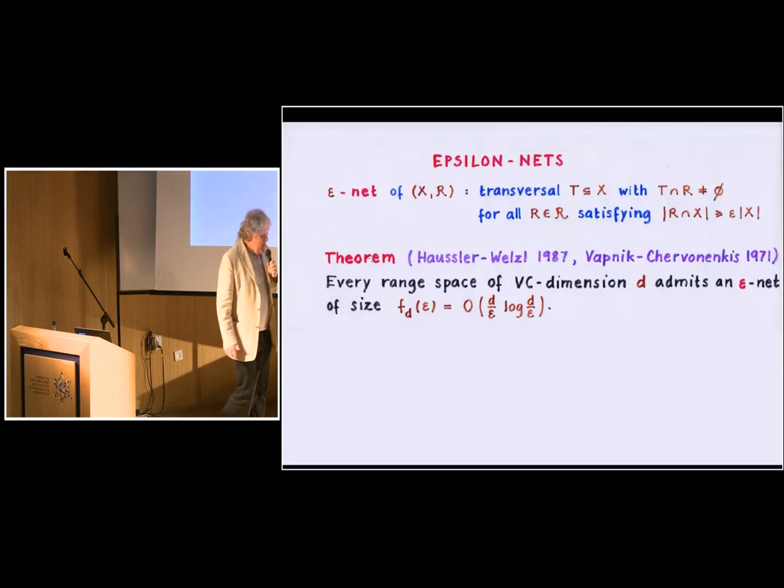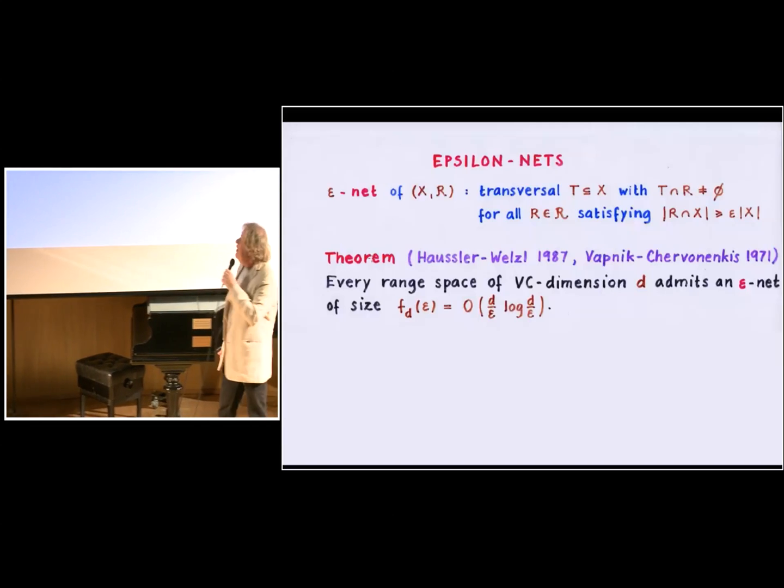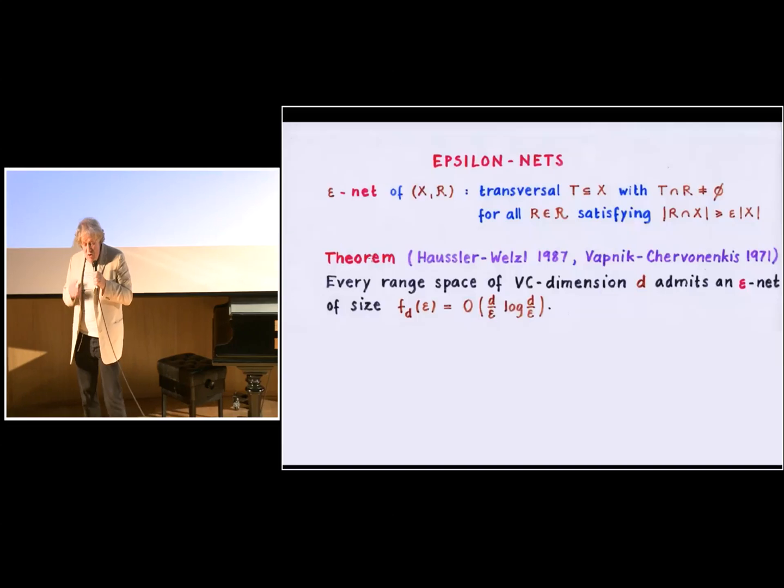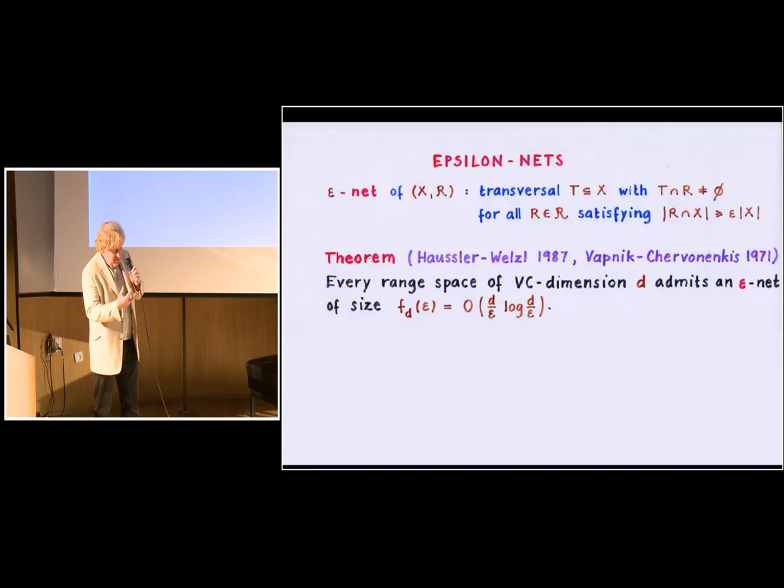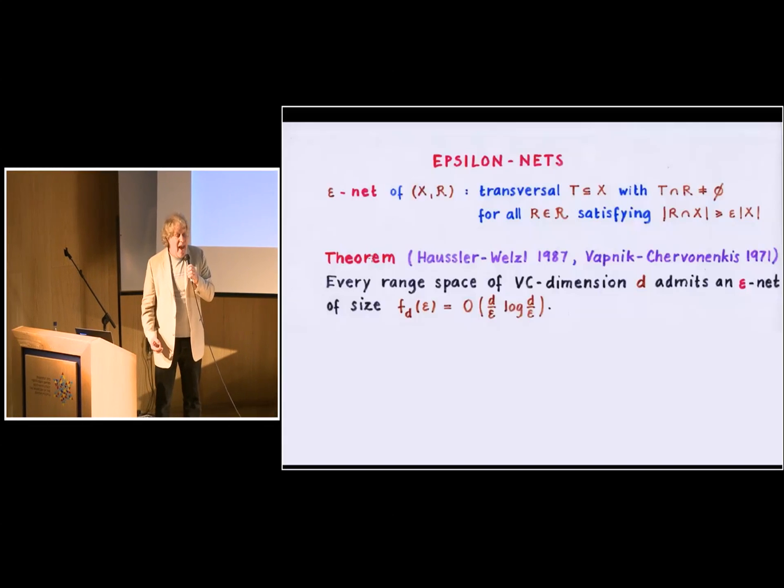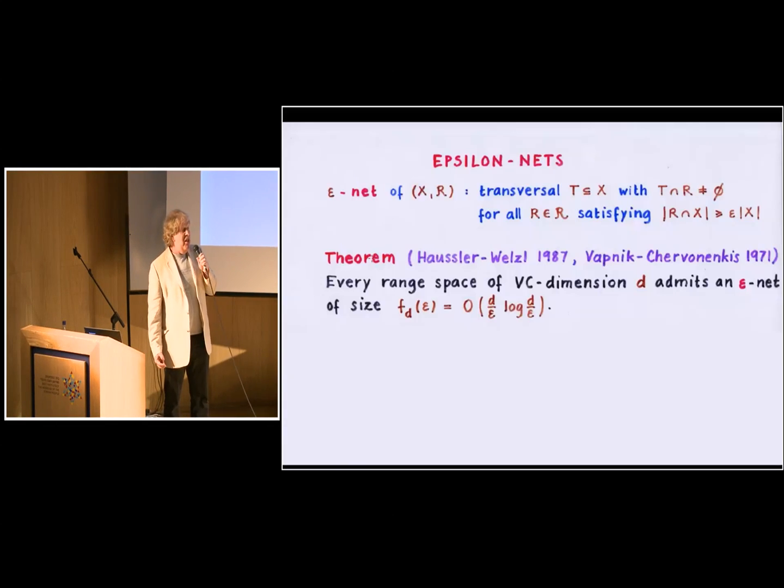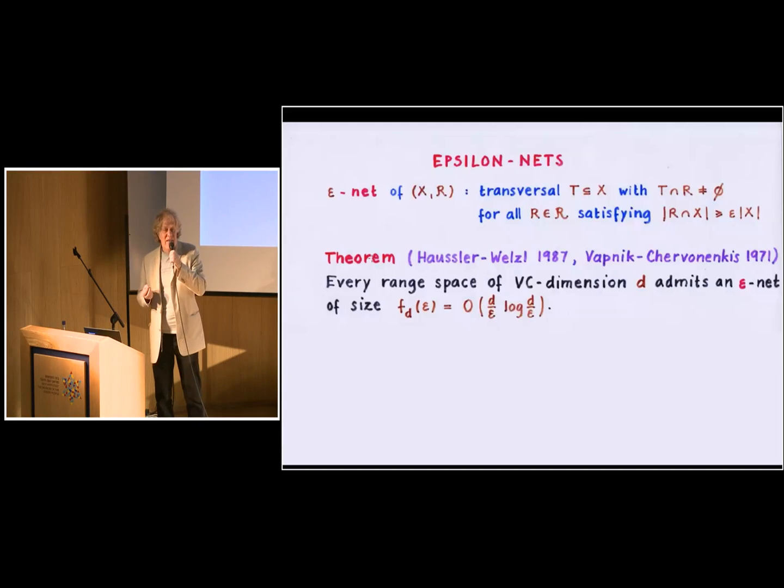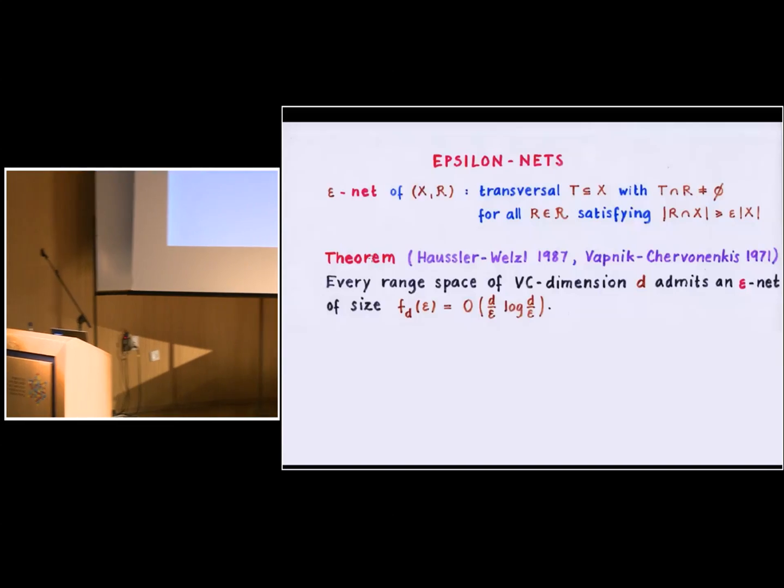So now I got to this notion, the notion of epsilon nets, which is a central notion in geometry. And so what is an epsilon net? So look at the hypergraph, and assume that you want to find a transversal. This means that you want to represent the edges, but only those edges that are relatively large. What does it mean that's relatively large? If the number of vertices is N, you want to represent only those hyperedges of the hypergraph that consist of at least epsilon times N elements, that contain at least epsilon proportion of vertices.